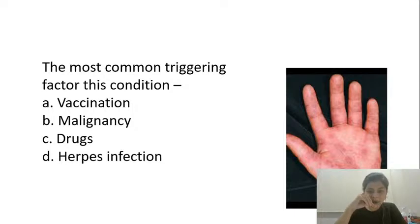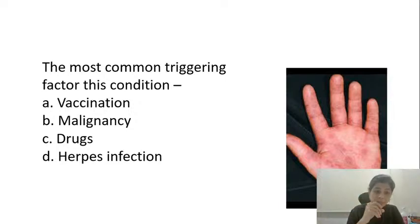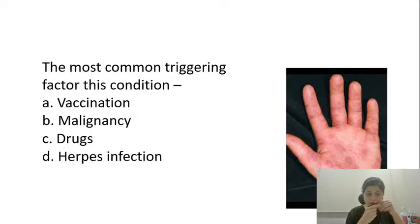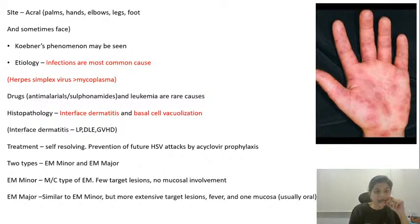The most common triggering factor for erythema multiforme — I have given you the answer to this already when speaking about the earlier question, but please do answer. This is a typical picture of erythema multiforme where you are seeing the typical target lesions on the palm. The most common triggering factor for this condition is herpes infection. Drugs can also cause it but they are rare causes. Malignancies can also cause it but again they are rare causes. The most common triggering factor is herpes infection. If you treat the herpes infection with acyclovir, your erythema multiforme should also disappear.